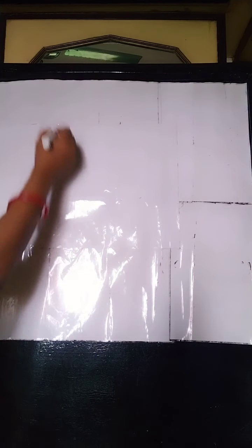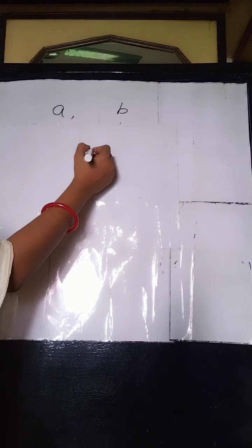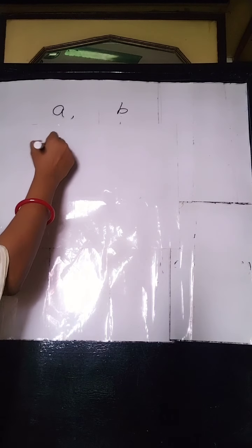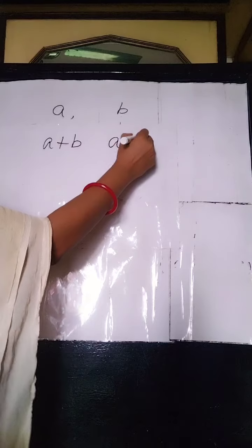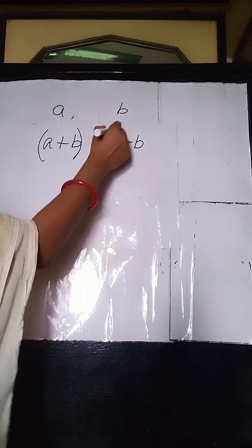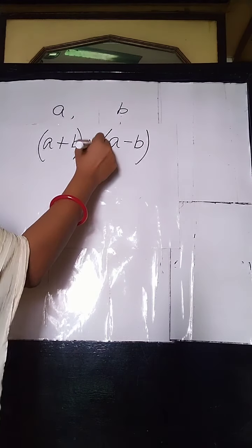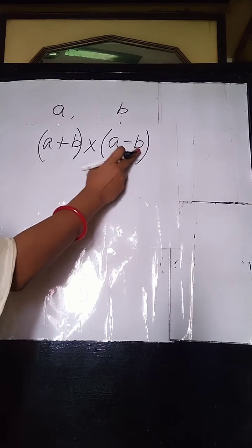I repeat: the product of the sum and the difference of two terms. That is, if the first term is A and the second term is B, then we look at the product of their sum and their difference — that is, A plus B into A minus B.